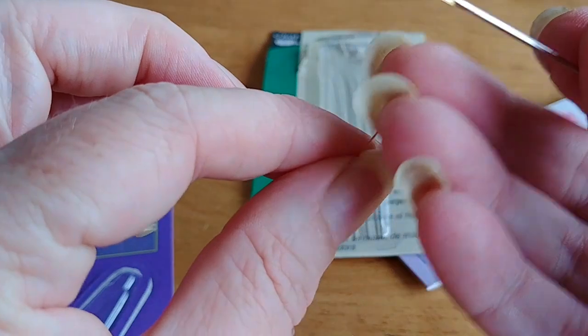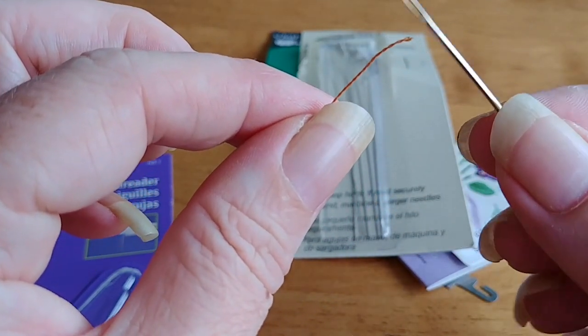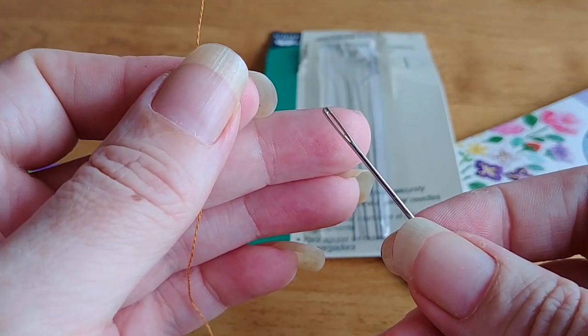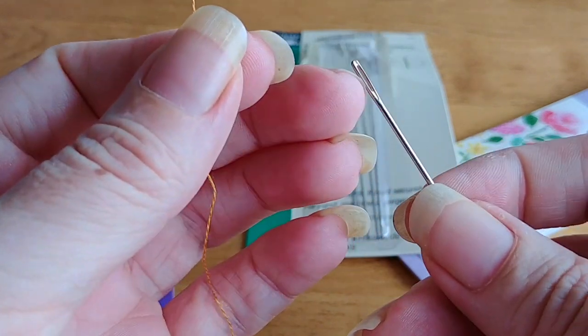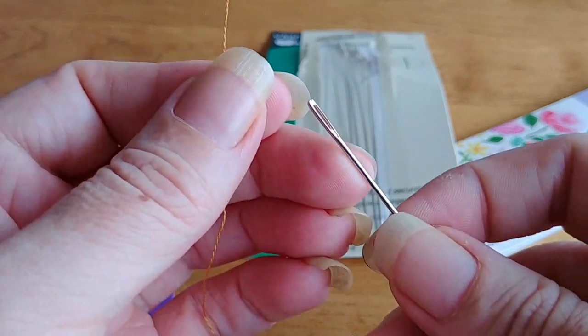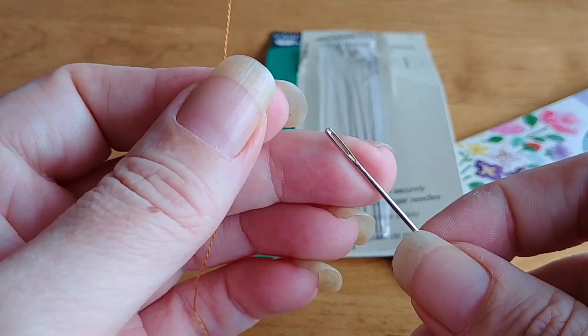Another method that some people do is they actually lick the end of their thread and put that through. That does help actually keep it together. The only problem with doing that is that it can actually rust out your needle eye, in which case you might find that your threads start getting a little bit frayed, or they start getting knotty. It's because the inside of your needle eye is actually starting to get worn away and it's shredded, it's starting to slowly shred the texture of your floss, and it can actually break your floss as well.